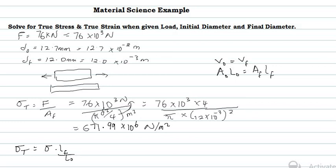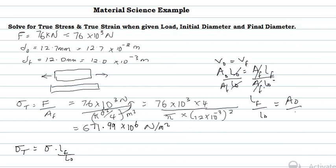From A₀L₀ = A_F L_F, if we rearrange to find LF/LO, we divide both sides appropriately, and this gives us LF/LO = A₀/A_F. So true stress can be expressed as engineering stress times A₀ over A_F, allowing us to work with areas instead of lengths.